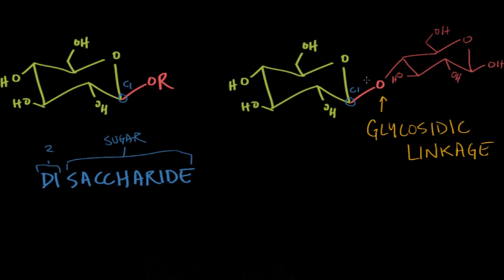We've got C1 of the first sugar, and then C4 of the second sugar. Right here would be C4, and it's just the same over here. So we call this a 1,4 glycosidic linkage.